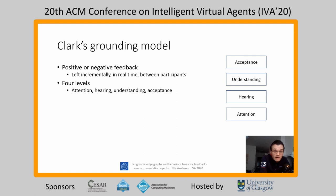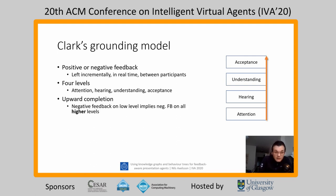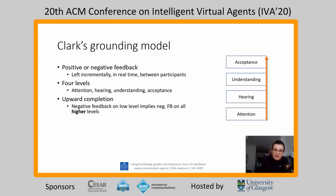In Herbert Clark's grounding model, there is positive and negative feedback left on four basic grounding levels: attention, hearing, understanding, and acceptance. Two important processes we use for our behavior tree are upward completion and downward evidence. Upward completion means that if you give explicit negative feedback on a low level, that implies negative feedback on all levels above it. So if you give me negative hearing, that implies negative understanding and negative acceptance — if you couldn't hear me, you can't understand me, and if you can't understand me, you can't accept what I'm saying.